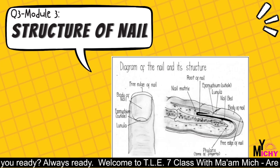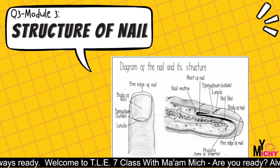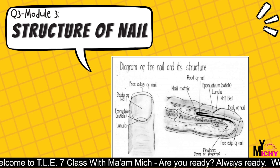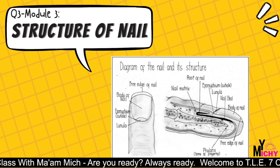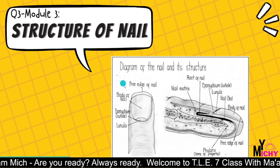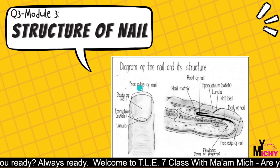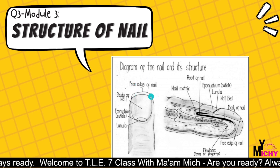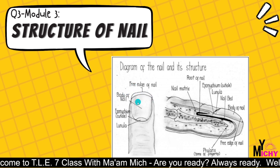Let's study the structure of our nails. Here we have a diagram of the nails and its structure. We have the free edge — that's what we cut — and the body of nail.